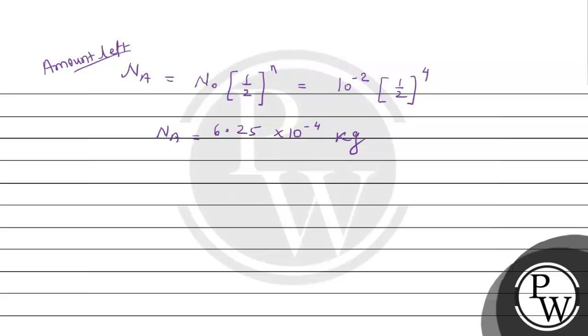Now we need to calculate N_B. Similarly, N_B will be calculated as N naught 1 by 2 raised to power N_B. For B, calculate 16 seconds upon 8 seconds half-life time period. N_B is 2.